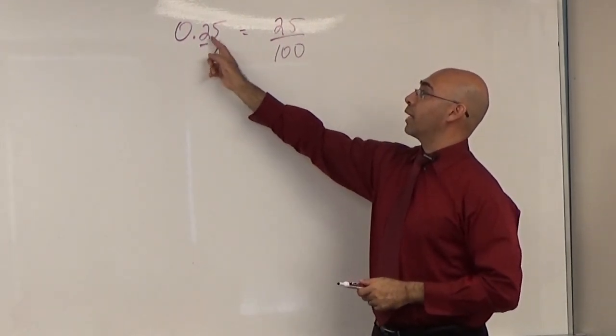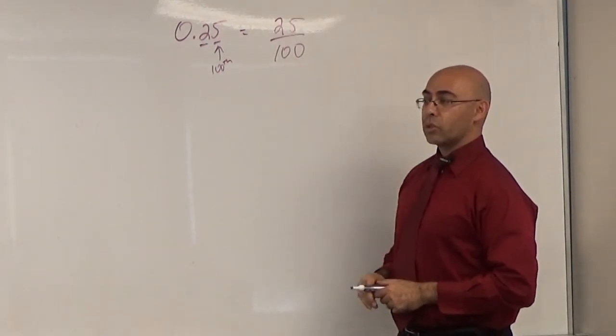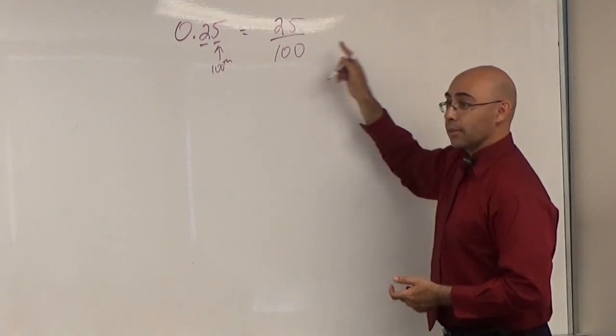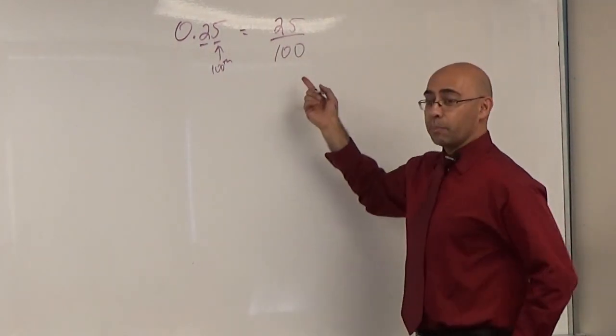A good shortcut is: see how many spaces are after the decimal point? That's how many zeros are in your bottom number. So if I had 50 decimal places, I'd have to have 50 zeros on the bottom. Am I in simplest form here?